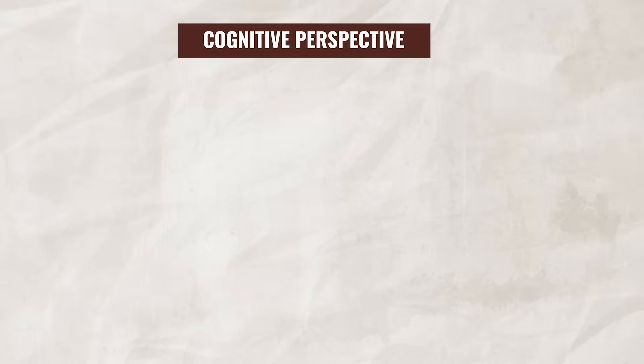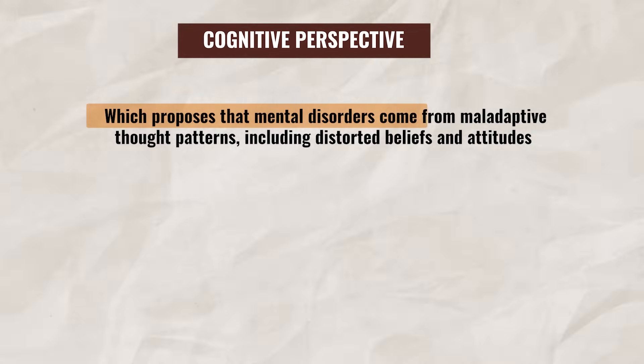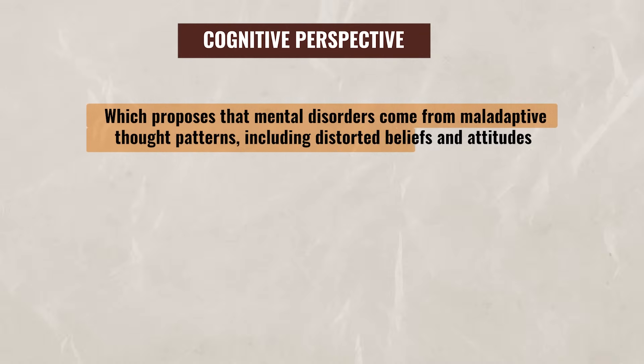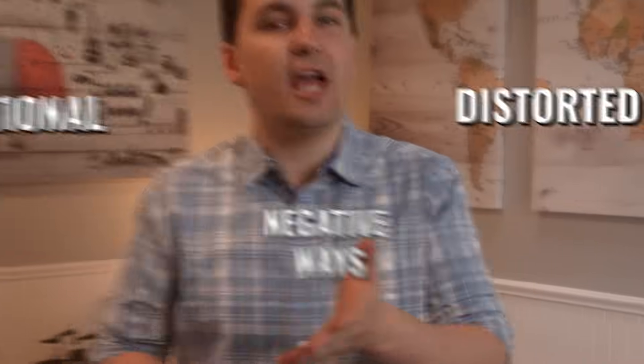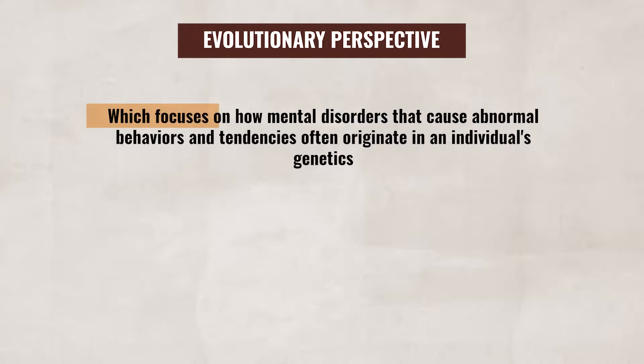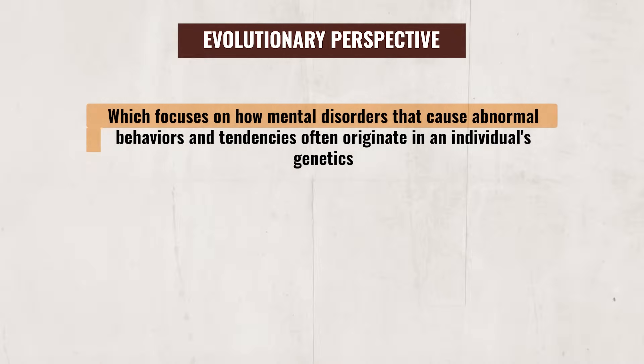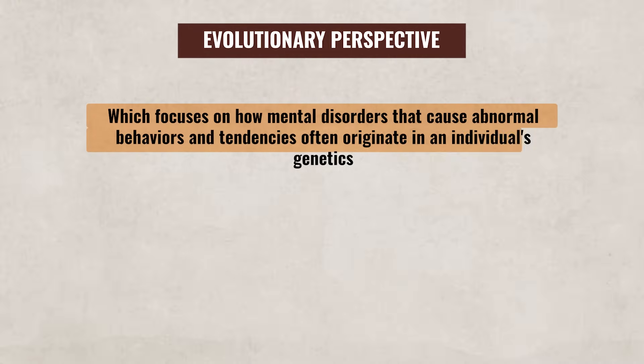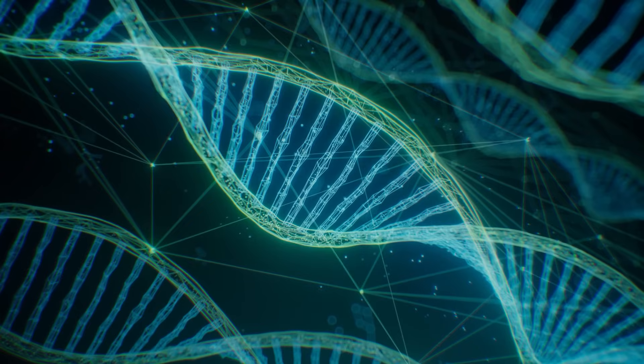Up next is the cognitive perspective, which proposes that mental disorders come from maladaptive thought patterns, including distorted beliefs and attitudes. Maladaptive thought patterns are distorted, irrational, or negative ways of thinking that can lead to emotional distress and unhealthy behaviors. Then there is the evolutionary perspective, which focuses on how mental disorders that cause abnormal behaviors and tendencies often originate in an individual's genetics, highlighting that certain maladaptive traits that were once helpful in survival now are not. This perspective also looks into genetic predispositions to see which mental disorders might be linked to genetic traits that are passed down.